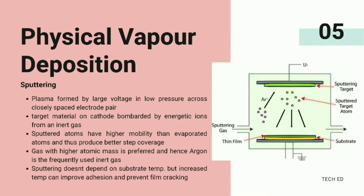Sputtering PVD employs plasma formed by large voltage in low pressure across closely spaced electrode pairs. The target material at the cathode is bombarded by energetic ions from an inert gas. The sputtered target atoms are deposited onto the substrate. Sputtered atoms have higher mobility and hence better step coverage. Gases with higher atomic number are preferred, hence argon is the frequently used sputtering gas. Sputtering doesn't depend on substrate temperature, though higher temperature is preferred because it can improve adhesion and prevent film cracking.